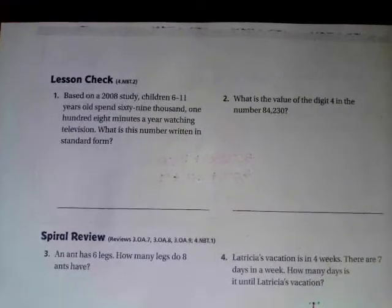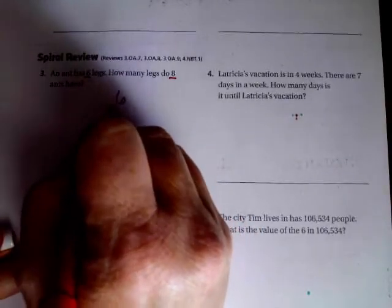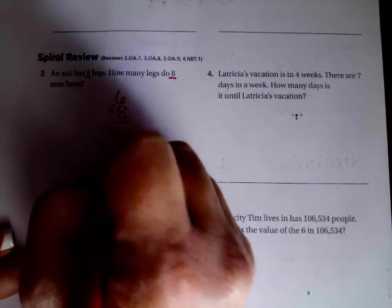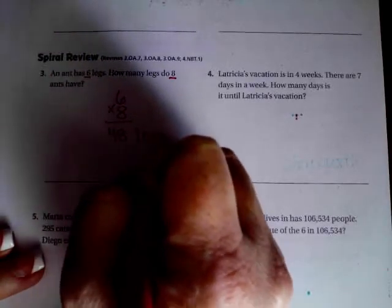We're going to go over onto the back where you guys are going to do the lesson check, just like always. We're going to do this spiral review. It's important to remember everything that we learned before this. An ant has six legs. How many legs do eight ants have? Six legs on each ant, there's eight ants. How many do they have? Well, six times eight is 48. Make sure that we label word problem, word answer.